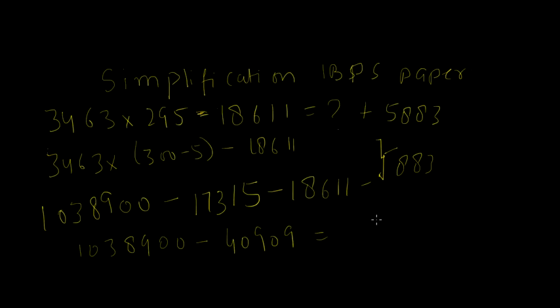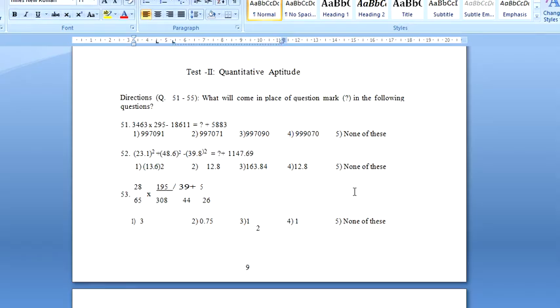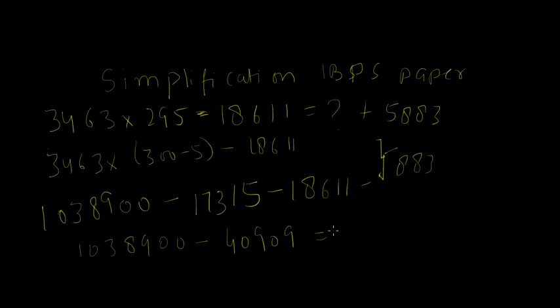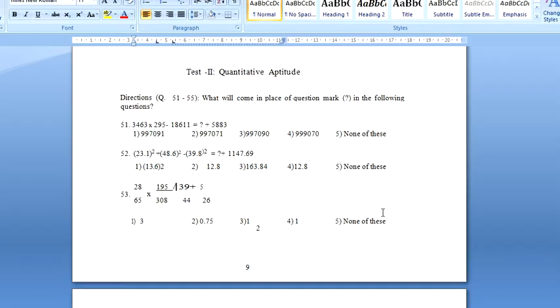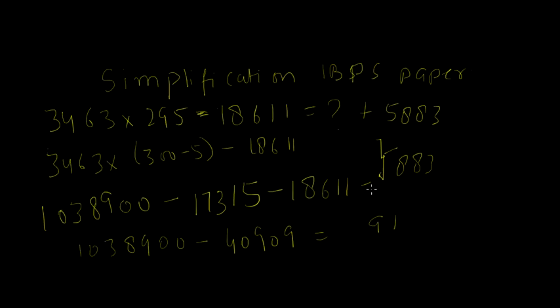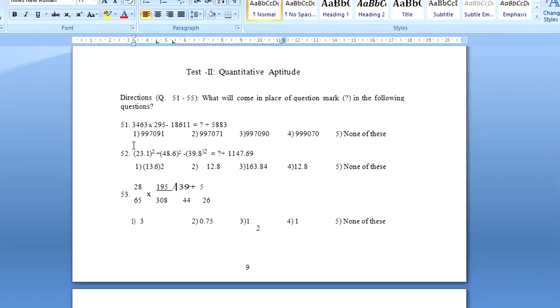We can also check from the given options. In the given options there are 9 1 and 7 1. So 9 1 is only in one option, so last two numbers would be 9 1. We could take 997091 as the option.